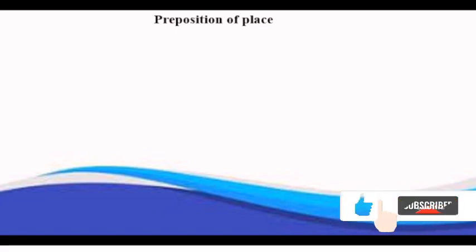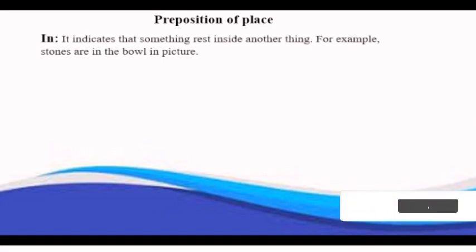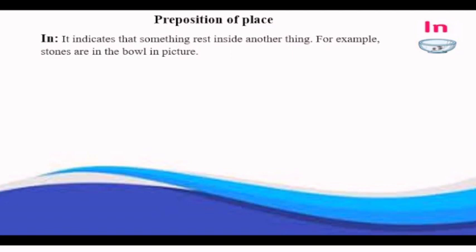Now let we discuss preposition of place. These are type of simple preposition, and these indicate position of one object with respect to another object. Some of its example are briefly discussed below. In indicates that something rests inside other thing. For example, stones are in the bowl, in picture.